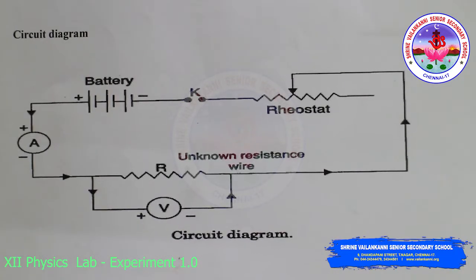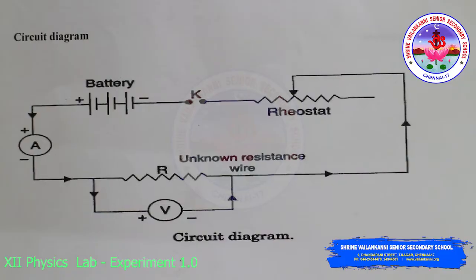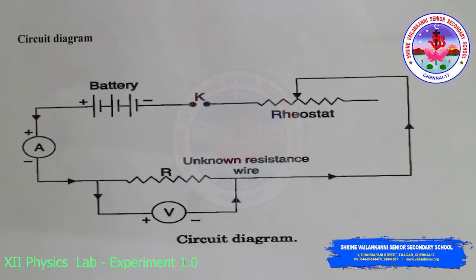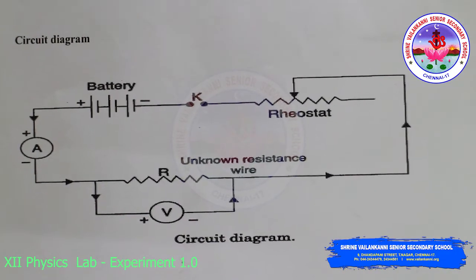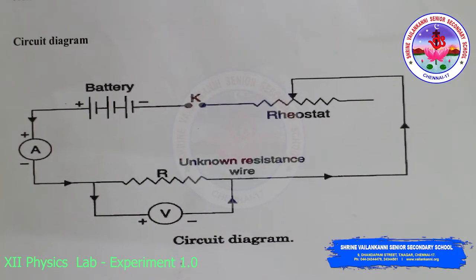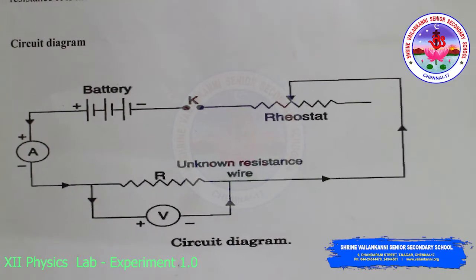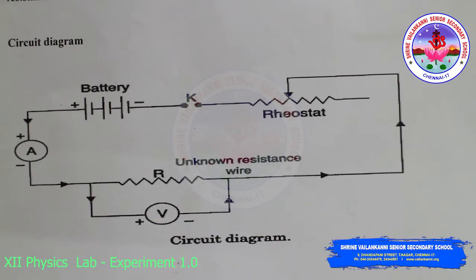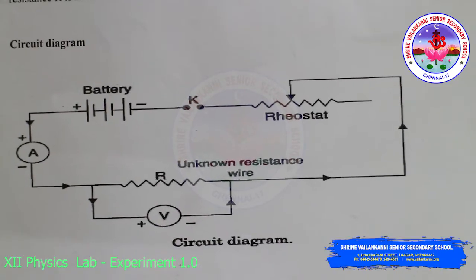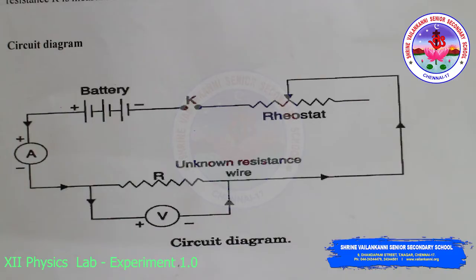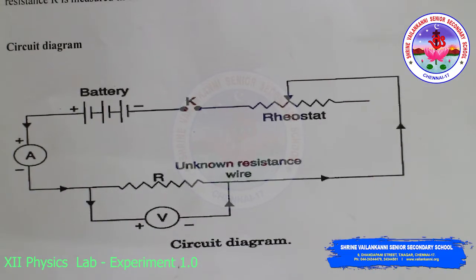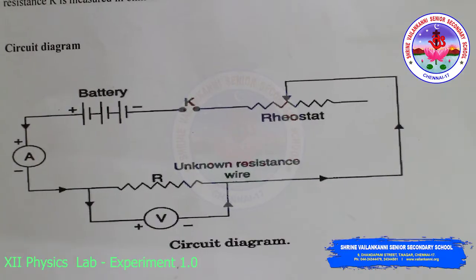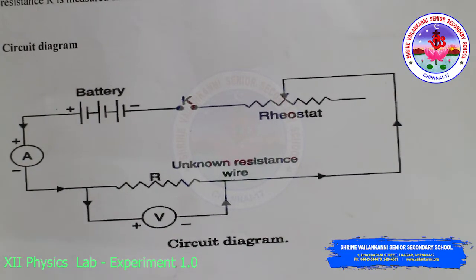In the circuit diagram, we use a battery of 0 to 12 volts. The negative terminal of the battery connects to one end of the key, from the key to the rheostat, from the rheostat to the unknown resistance, then from the unknown resistance to the ammeter — all in series. The voltmeter is connected in parallel.